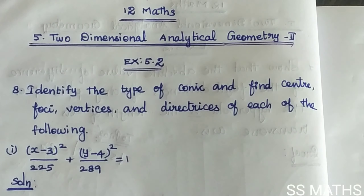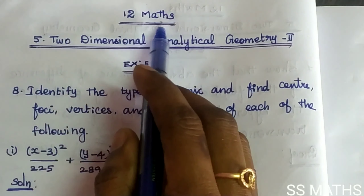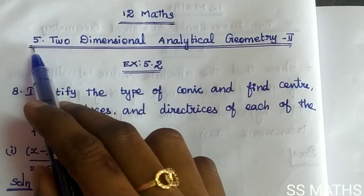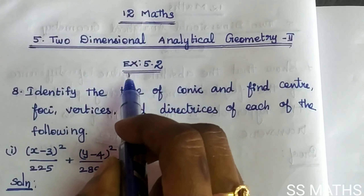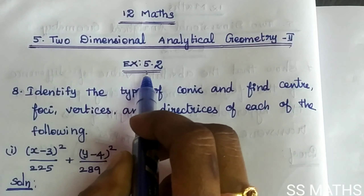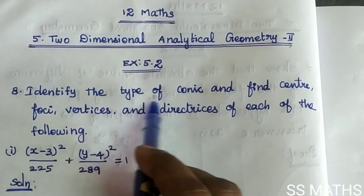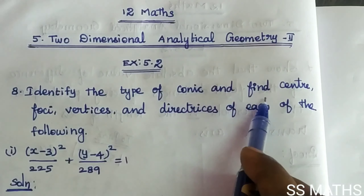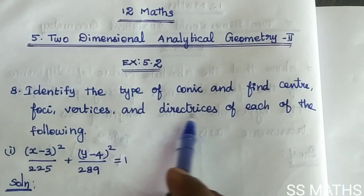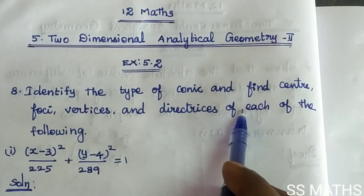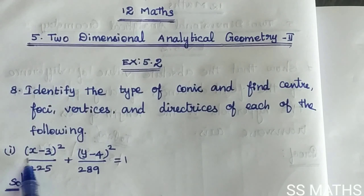Hi students, I am Prima Thangaraj. Plus 2 maths, Chapter 5: Two-Dimensional Analytical Geometry, Exercise 5.2, Question number 8: Identify the type of conic and find center, foci, vertices, and directrix of each of the following. Sub-question 1.